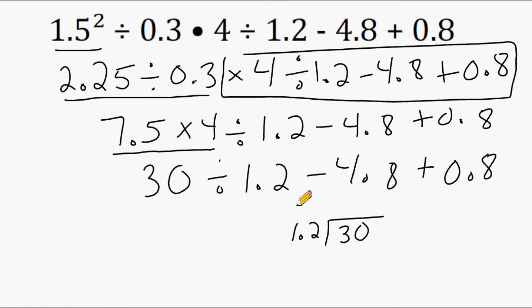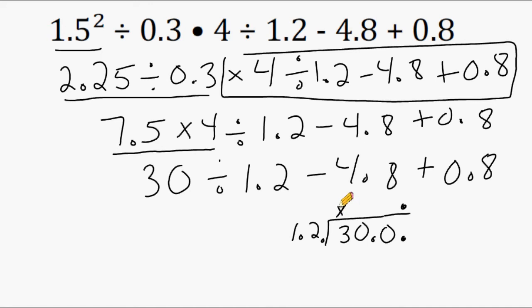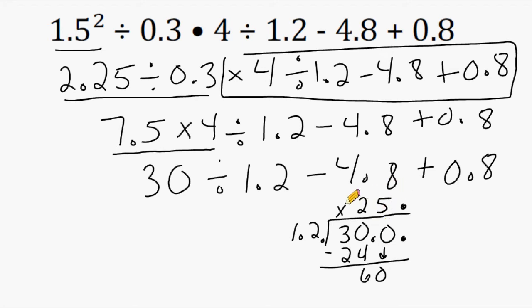Now if you have a decimal in your divisor, you have to put one in your dividend all the way at the end, and then after that decimal write a 0. Next, we have to take this decimal and move it all the way to the end. Because we had to move over one place value to get there, we do the same with the dividend decimal. After moving it over, we move it directly above and then begin dividing. 12 goes into 3 no times, so don't write anything above the 3. 12 goes into 30 twice, which is 24. 30 minus 24 is 6. We bring down the 0 and divide 12 into 60, which fits in exactly 5 times. So 30 divided by 1.2 is equal to 25.